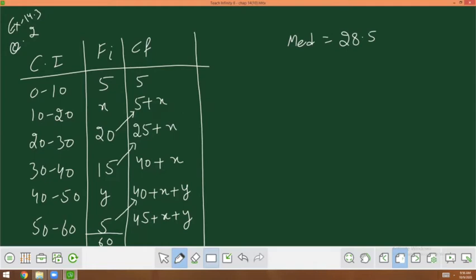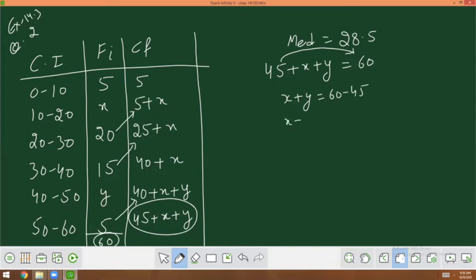Firstly, we have to use the last one. The last one is the total number of terms. 45 plus x plus y is equal to the total number of terms that is 60. 45 to right hand side will go. 60 minus 45, that is x plus y is equal to 15. It is your first equation. Two variables to find out, two equations are required. This is the first equation.